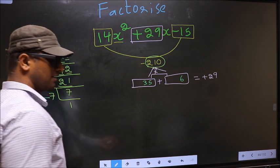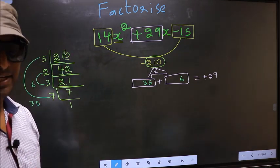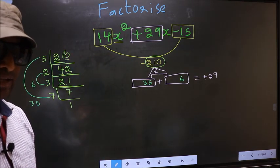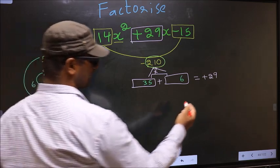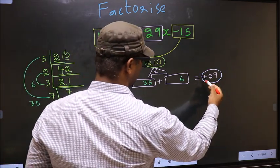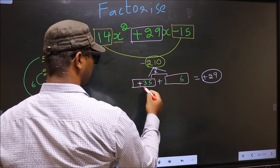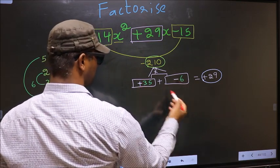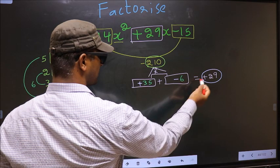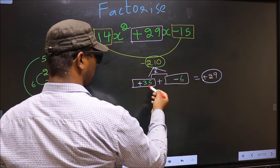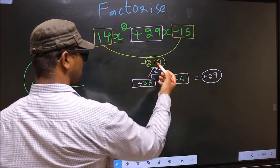Next, we should adjust the signs now. What I mean is, we should get +29. To get +29, we should put + here and - here. +35 - 6 = +29, and +35 × -6 = -210. So we have adjusted the signs.